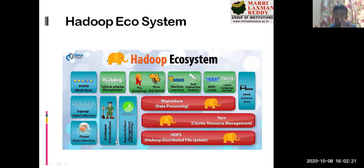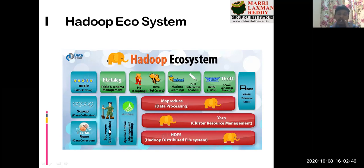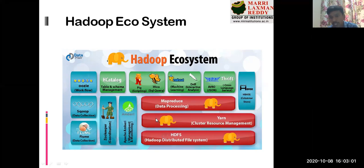ZooKeeper is the coordinator of all these tools. If any tool is not working properly or misbehaving, ZooKeeper tries to stabilize it. That is why the name ZooKeeper is given — it guides all the animal-named tools and controls any that are not behaving properly. Comparing tools with animal names makes them easier to remember.